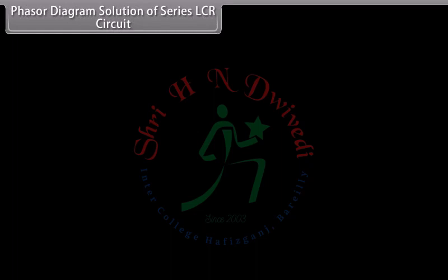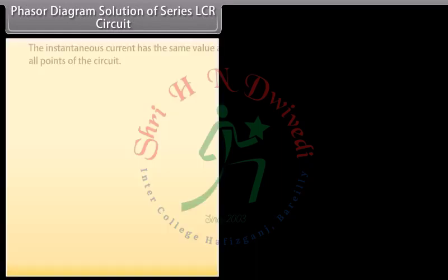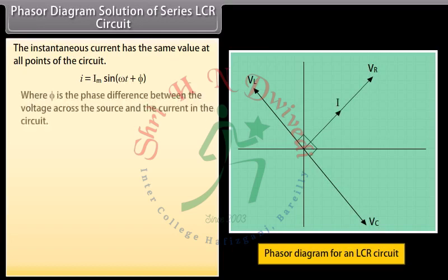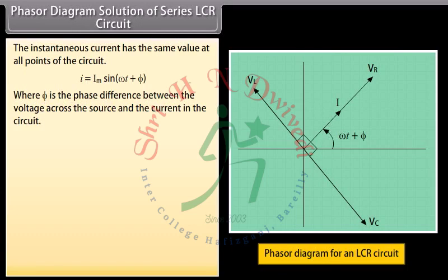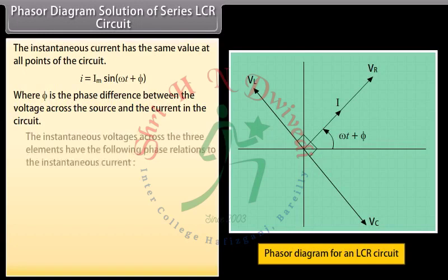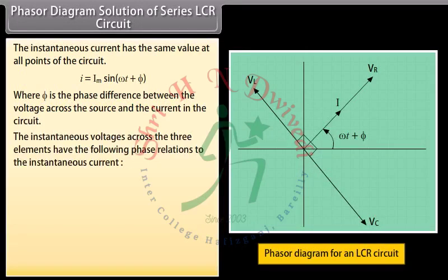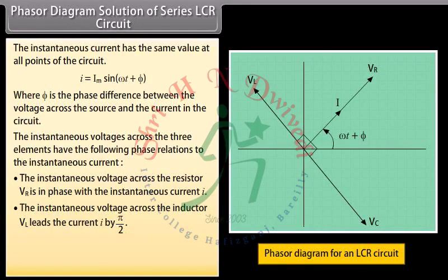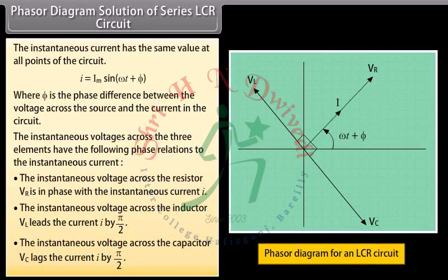Phasor diagram solution of series LCR circuit: the instantaneous current has the same value at all points of the circuit, I = Im sin(ωt + φ), where φ is the phase difference between the voltage across the source and the current. The instantaneous voltage across the resistor VR is in phase with the current I; the voltage across the inductor VL leads the current by π/2; and the voltage across the capacitor VC lags the current I by π/2.